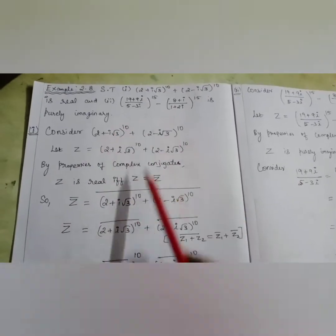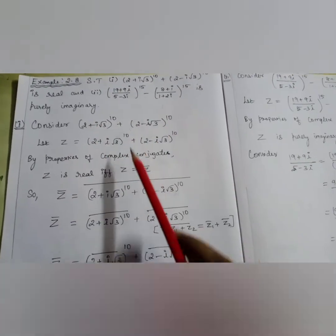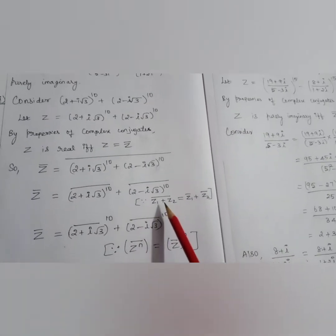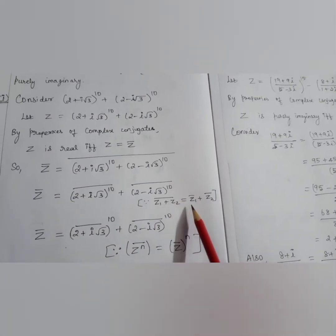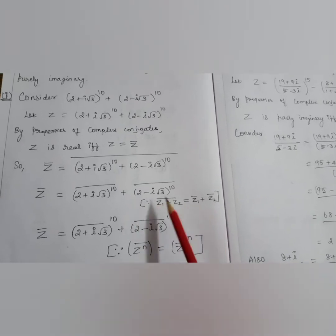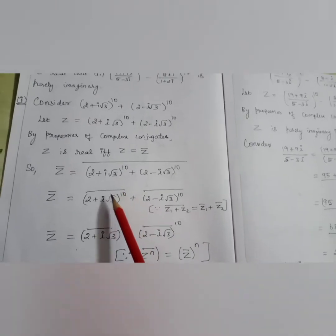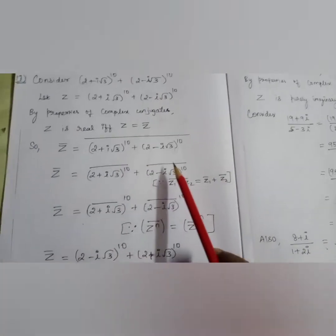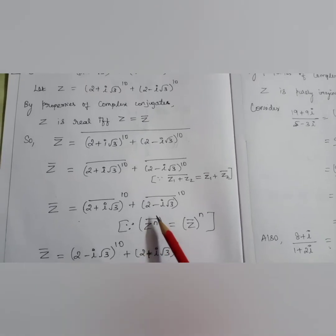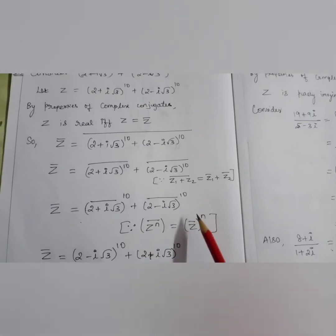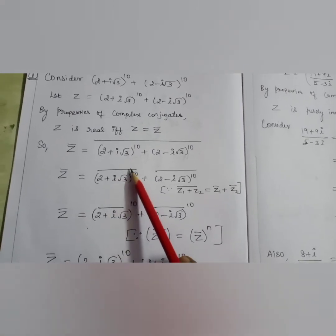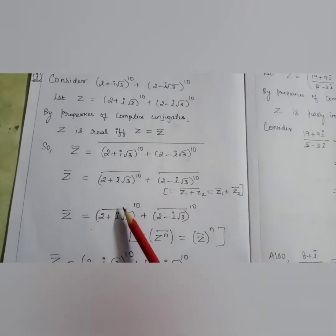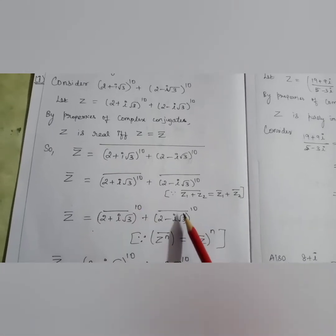So z̄ equals — I will write z with the bar, meaning I have to write the conjugate for this expression: [(2 + i√3)^10 + (2 − i√3)^10] bar. Using the property that (z₁ + z₂) bar = z₁ bar + z₂ bar, we split the bar: [(2 + i√3)^10] bar + [(2 − i√3)^10] bar. Then using the property that (z^n) bar = (z̄)^n, we interchange the conjugate and the power: (2 + i√3) bar whole power 10 + (2 − i√3) bar whole power 10.